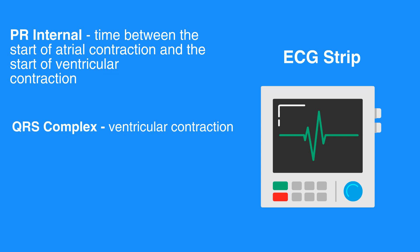Following ventricular contraction, the ventricles rest and repolarize, which registers as the T wave. The atria also repolarize, but this coincides with the QRS complex. Therefore, it cannot be observed on the ECG strip.